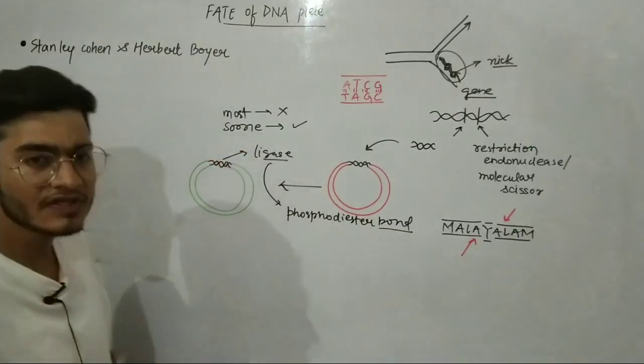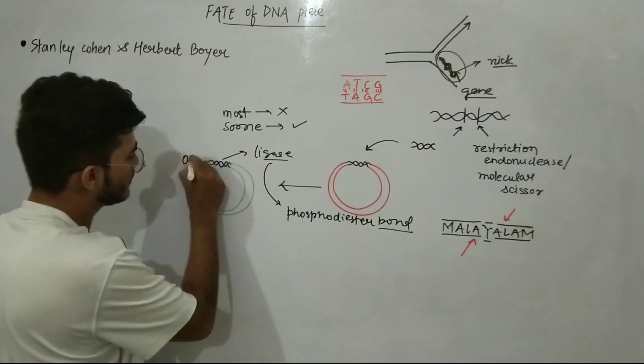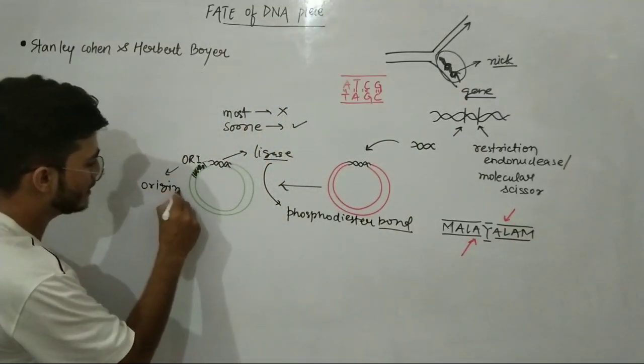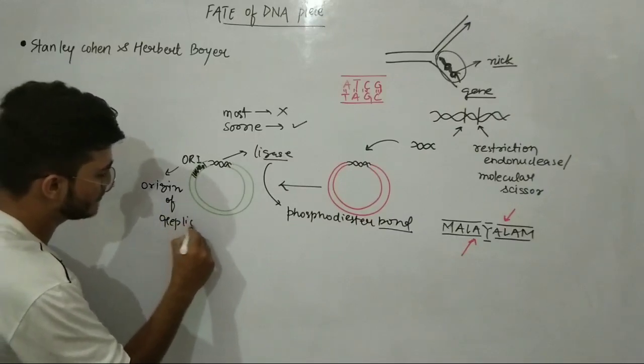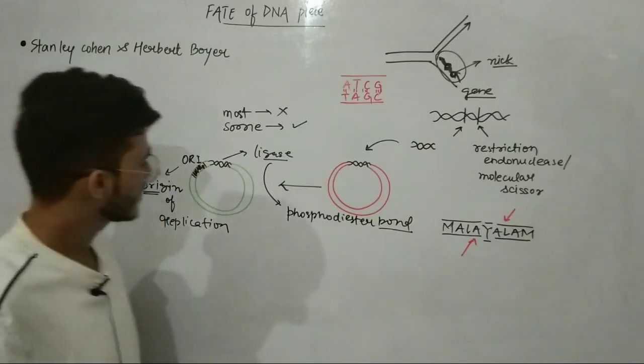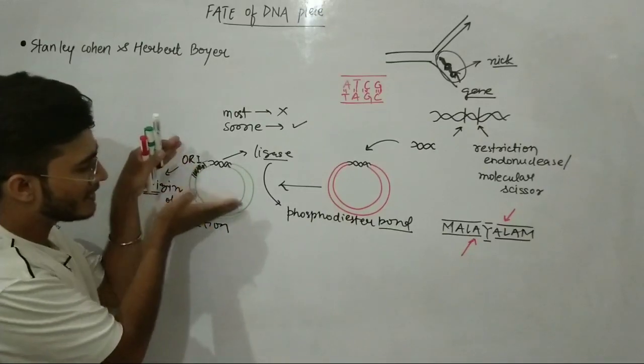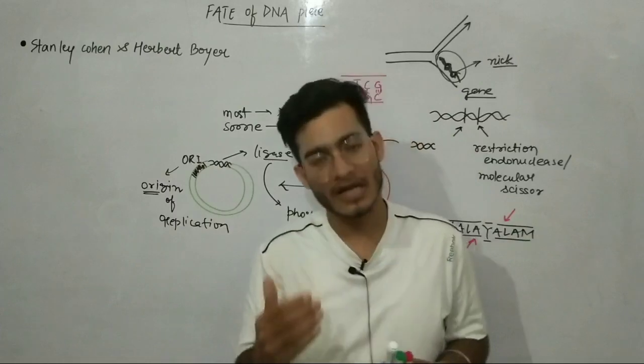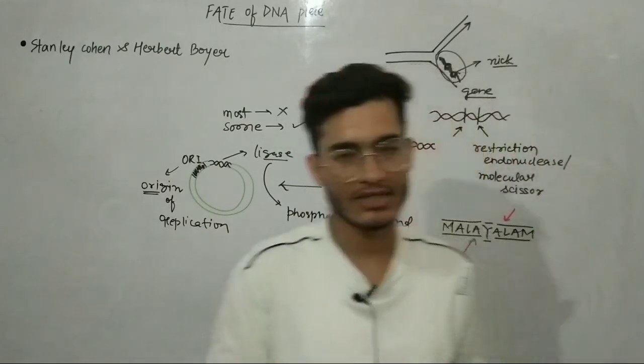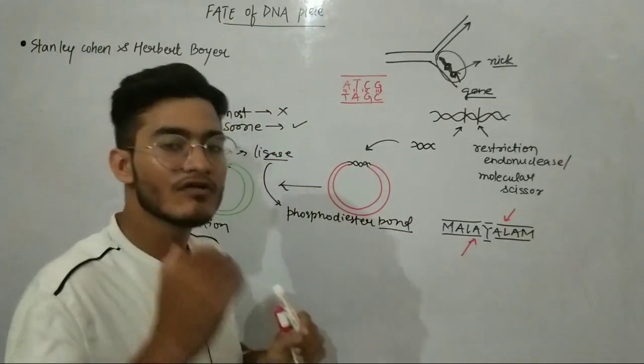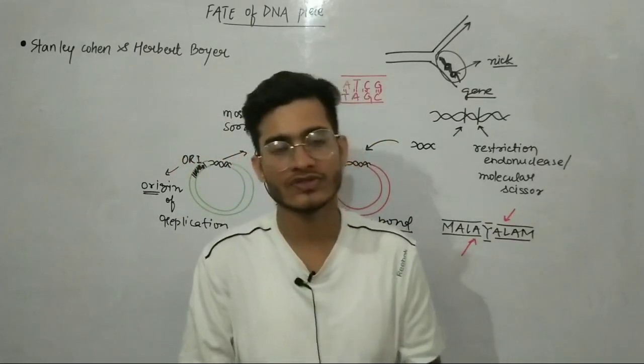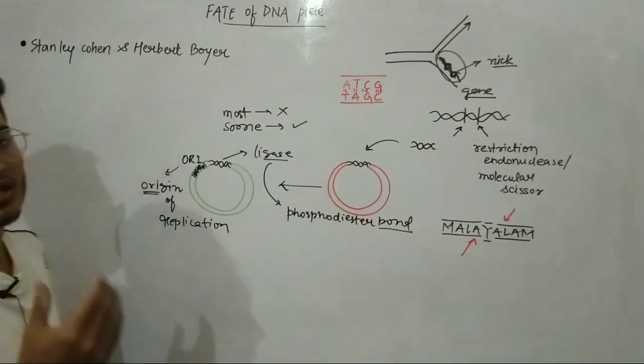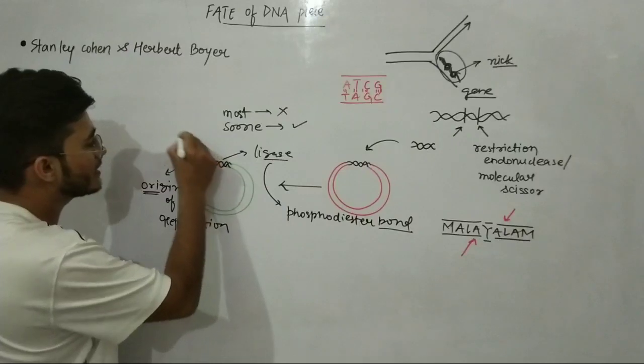An ORI region must be present. ORI region basically means your origin of replication. Replication should be started from this particular point only. After this your replication bubble will start forming and then replication will complete. If the host genome is able to replicate itself, obviously there will be ORI. If replication will not be initiated, this piece of gene will not be able to clone or multiply itself in the host cell. So it becomes very important that in which genome it will integrate. If ORI is present, replication will initiate.